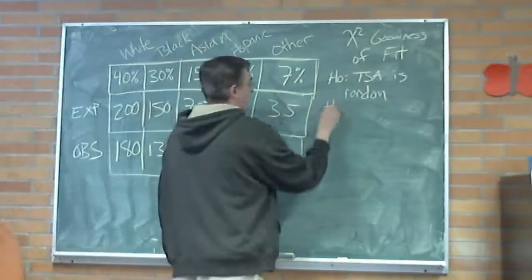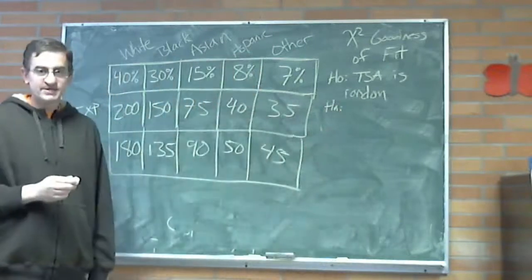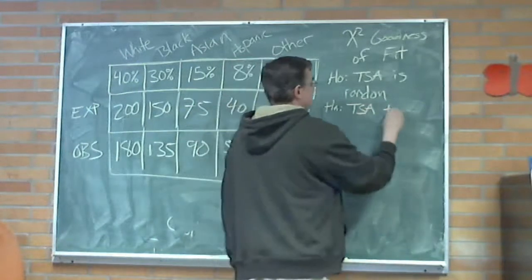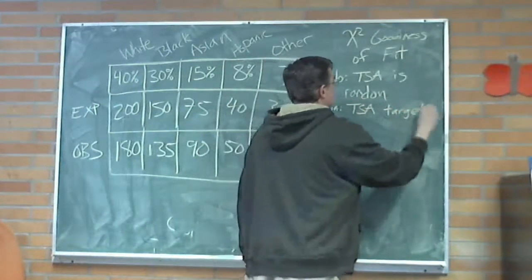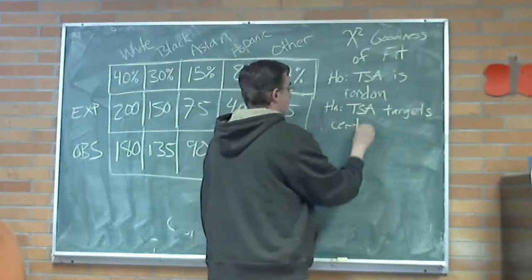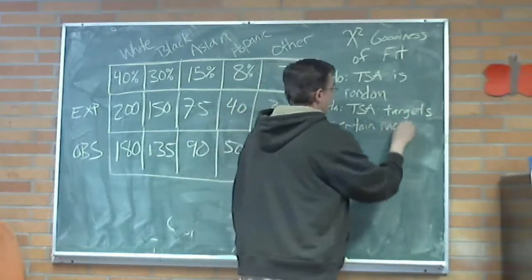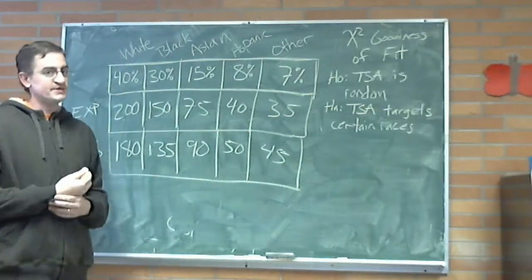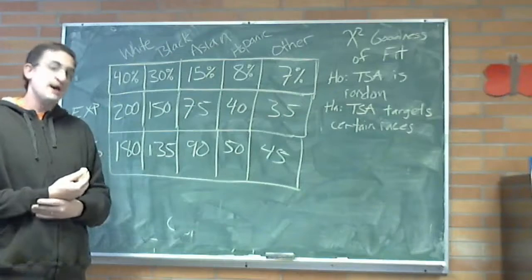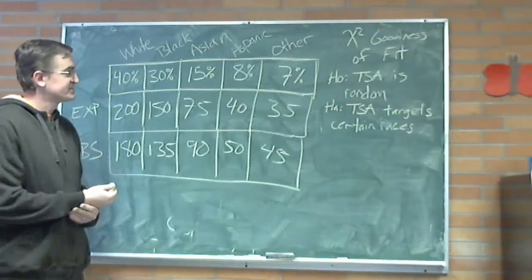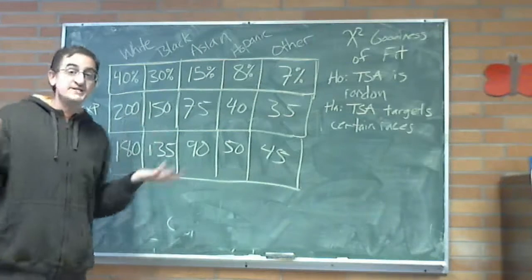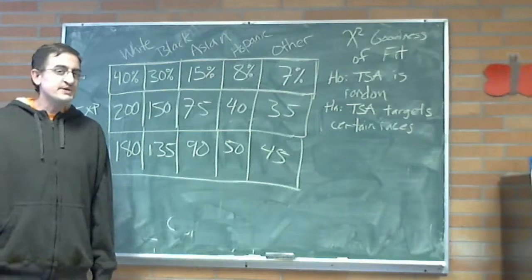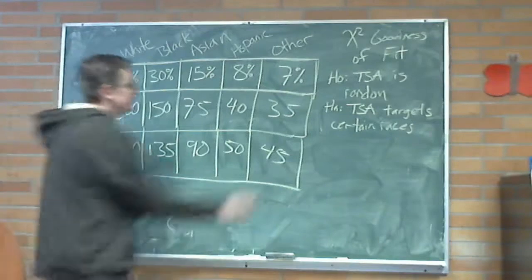Is there another way to say this? Yeah, we could have said our observed values match what we expected. The proportions of each race fit the regular proportions, things like that. Now, what's the alternative if it's not random? What does that tell you about TSA? That the airport is targeting certain races.